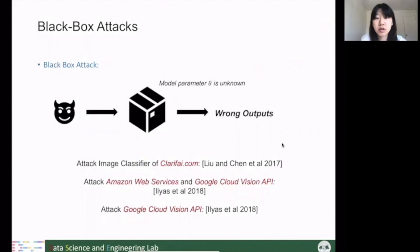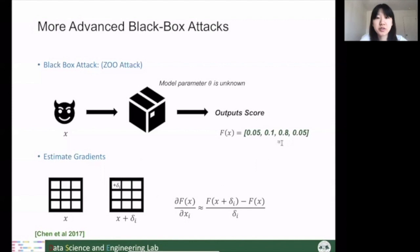There are also score-based approaches to launch black-box attacks. For example, ZOO — Zero-Order Optimization — assumes the attacker has access to prediction confidence scores from the victim classifier's output. We can approximate derivative information around the victim sample X using the score function for symbols around X, then utilize the approximate gradient to calculate adversarial examples.